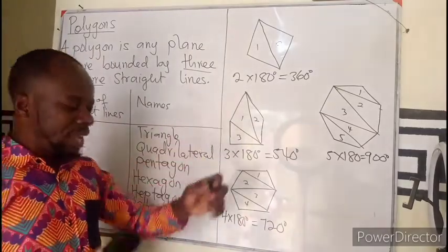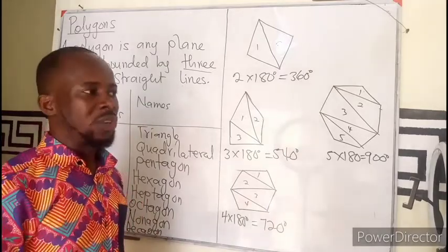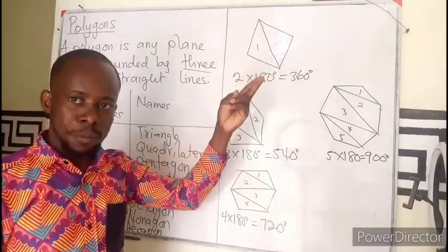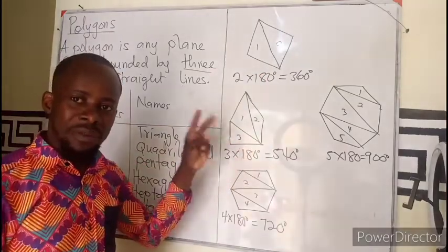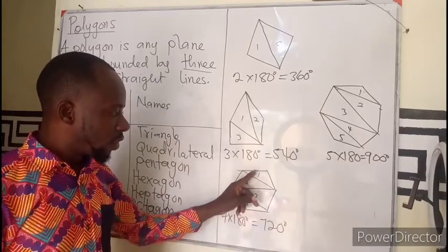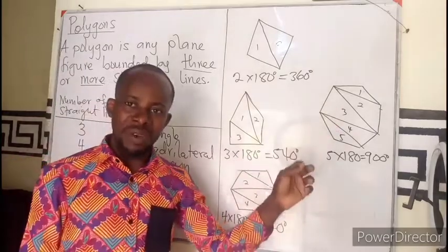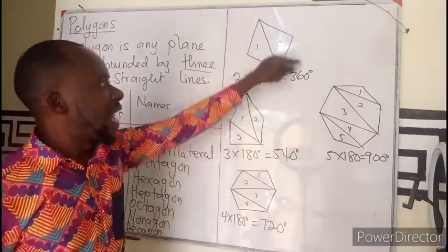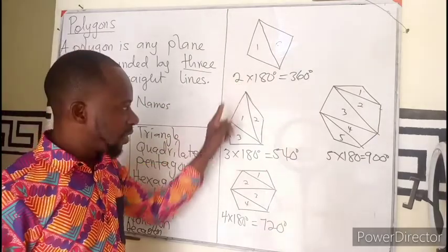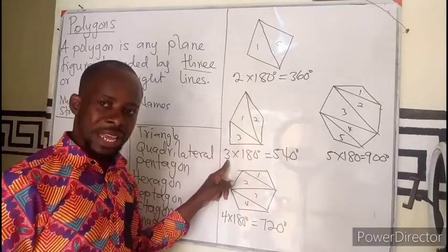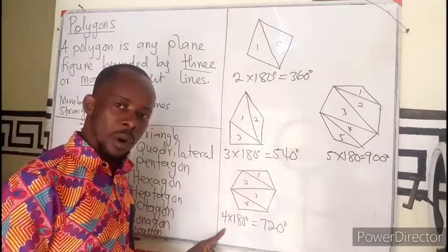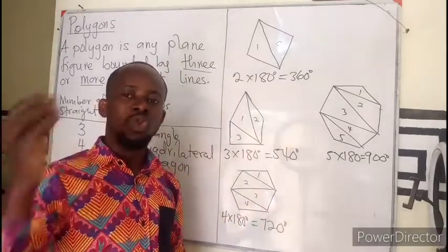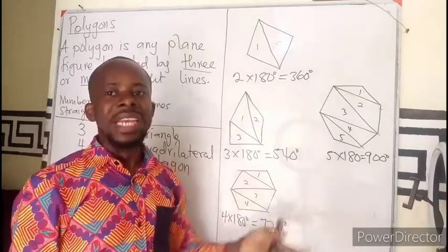We need to develop a pattern to avoid always drawing the shape. If sides equal four, triangles equal two. Sides five, triangles three. Sides six, triangles four. Sides seven, triangles five. You can see the number of triangles is always the number of sides minus two. So to find the sum of angles in a polygon, subtract two from the number of sides, then multiply by 180.